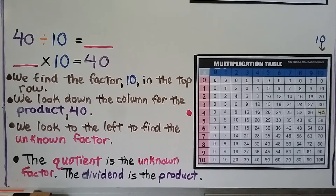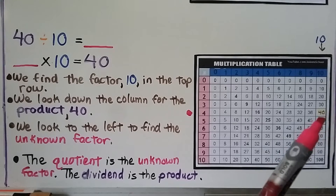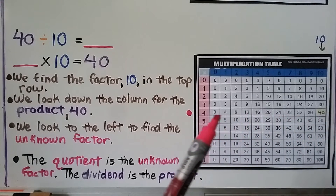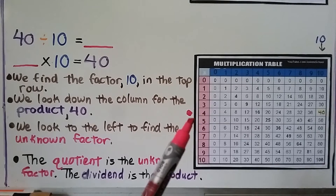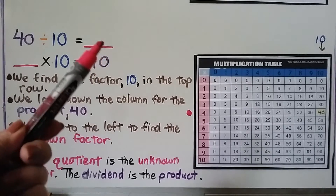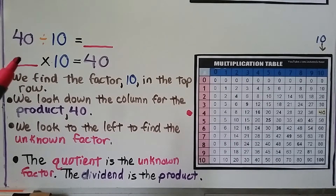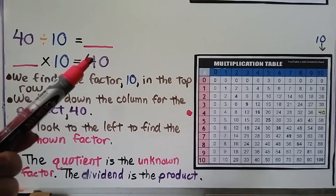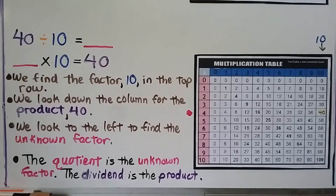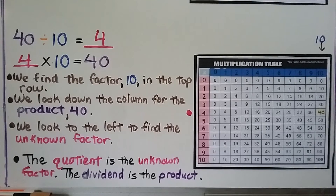We then look to the left to find the unknown factor. Following the 40 to the left, we get 4. The quotient is the unknown factor and the dividend is the product. So 40 divided by 10 is equal to 4, and 4 times 10 is equal to 40.